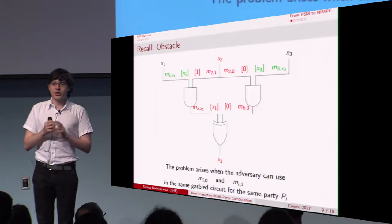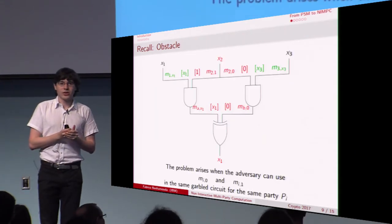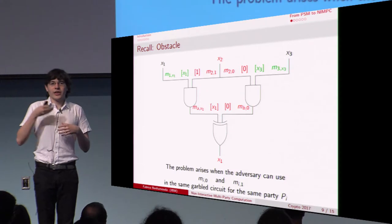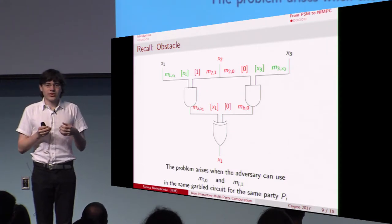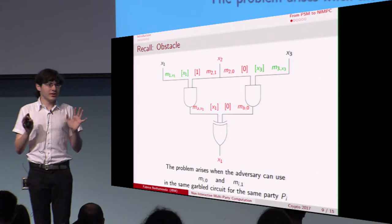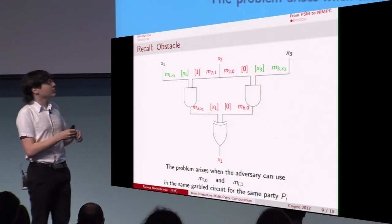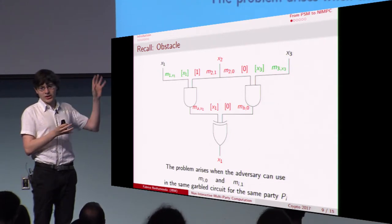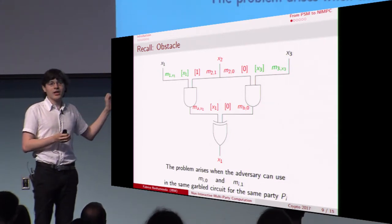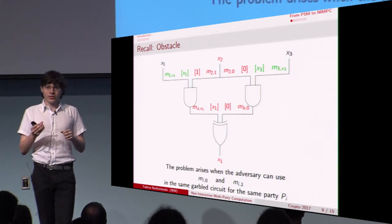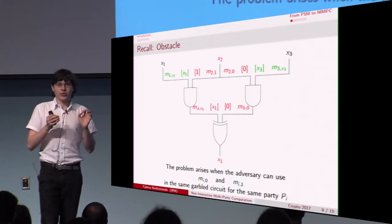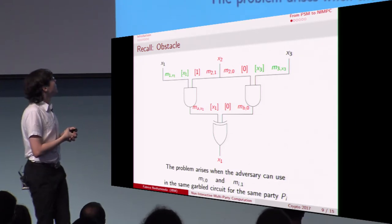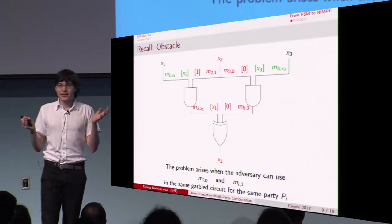Now let's look at the transformation. We want to transform a PSM for some function and make it secure against a constant-size collusion. For simplicity, I will focus on PSMs constructed from garbled circuits and consider only collusion of size one — making it secure against one player colluding with the evaluator. Even in that case we don't know much: the issue is that if the evaluator learns two labels for the same input wire it can learn too much information.